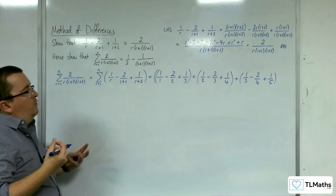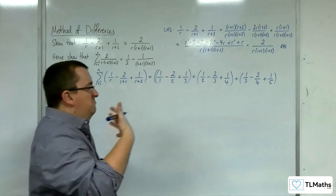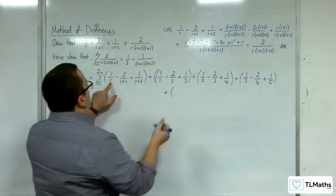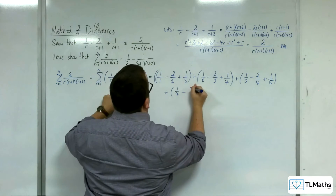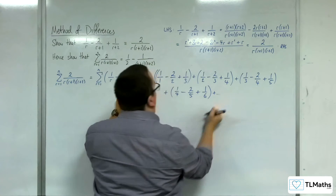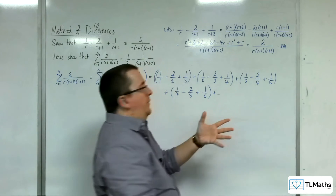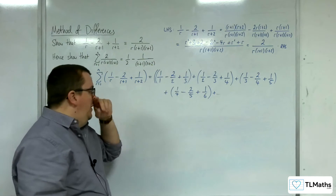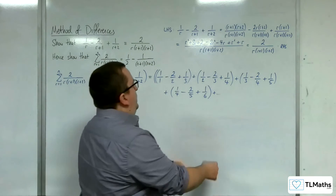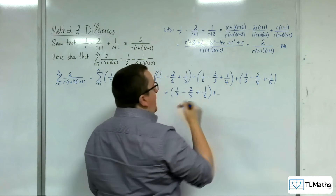Now if you still aren't sure where the cancellations are coming from, let's try another term. Substituting in r equals 4: 1 over 4, take away 2 over 5, plus 1 over 6. You'll see the denominators are going 1, 2, 3 then 2, 3, 4 then 3, 4, 5 then 4, 5, 6. If you look at the thirds: 1 third, take away 2 thirds, plus 1 third — they would cancel.